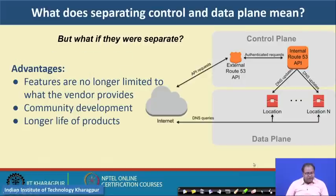The advantage is that features are no longer limited to what the vendor provides — you can always write your own network application as part of the controller. Through community development in an open source movement, people can come together and design new network protocols and implement them on the control plane itself without requiring vendor support, which obviously increases the product lifetime.